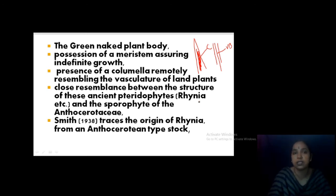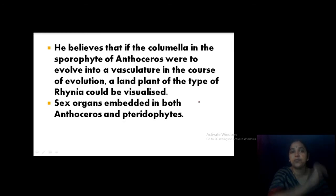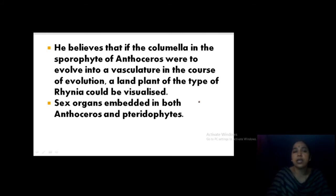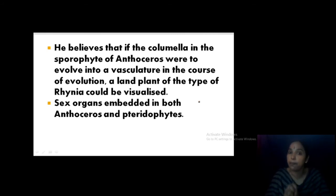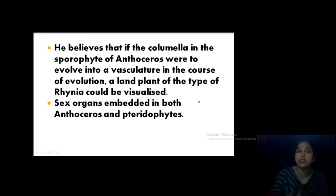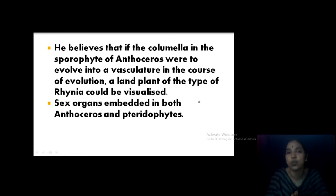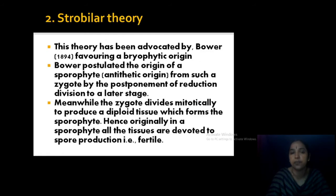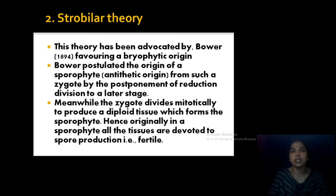The evidences supporting Anthocerotian theory are: first, the green naked plant body; second, presence of a meristem assuring indefinite growth; third, the columella — the sterile tissue — that can be compared with the vasculature of land plants; and also the sex organs embedded in Anthoceros as well as in pteridophytes — they are embedded inside and not visible on the outside.